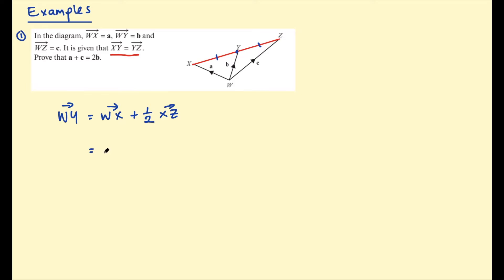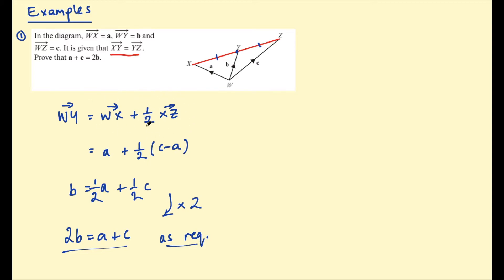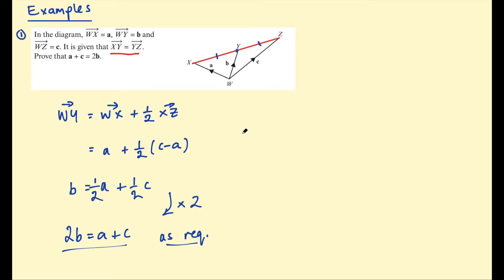We find the position vector of the point dividing the line segment: WY equals WX plus a half of XZ. WX is A, and XZ we can express using position vectors as C take A. So this is a half times C take A, which simplifies to a half A plus a half C. This equals WY, which is B. Multiplying by 2 gives 2B equals A plus C, and we have proved A plus C equals 2B as required. That formula is almost like a shortcut for these types of questions.